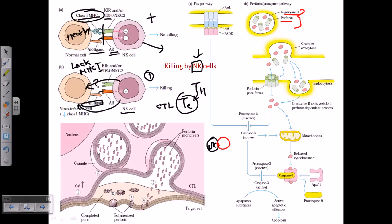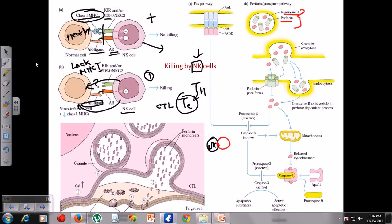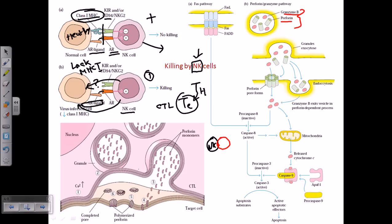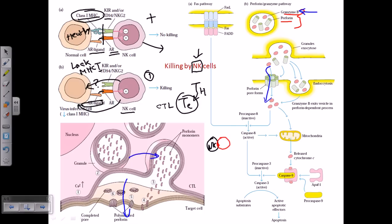As the NK cell comes close, its granules fuse with the infected cell membrane and release granzyme and perforin. Perforin monomers form a cylindrical channel, creating a pore in the infected cell membrane. Through this pore, granzyme B enters the infected cell. While the killing mechanism is initiated by granzyme B, perforin is required to create the holes for granzyme's entry.